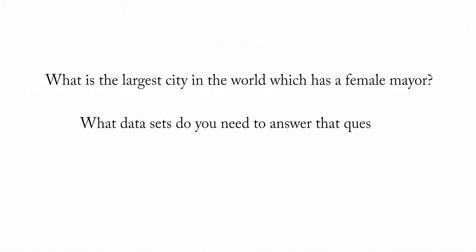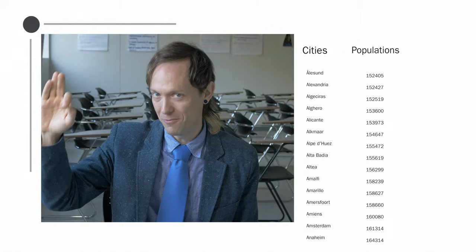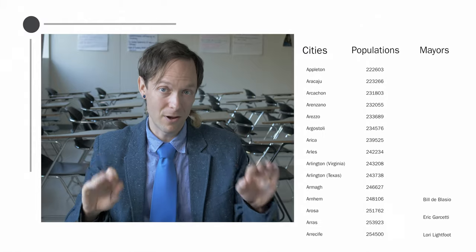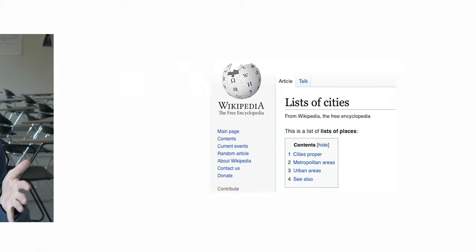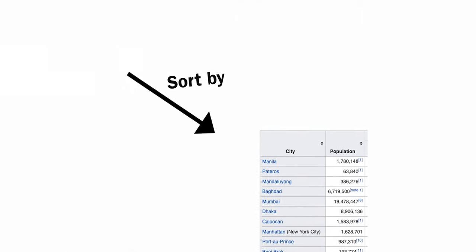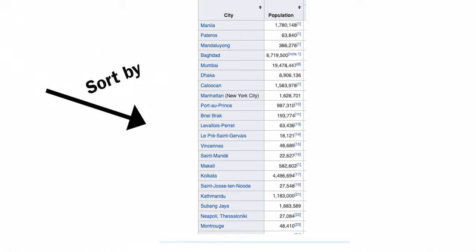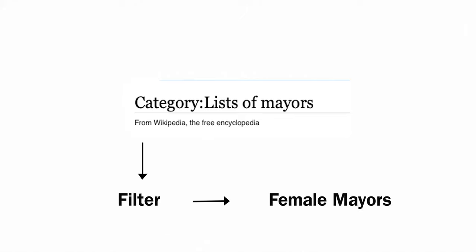What data sets do you need to answer that question? The answer is that you need a list of every city in the world, you need the populations of every city, you need a list of every current mayor for all the cities, and you need to know the genders of every mayor. So first you list every city in the world — Wikidata has this, Wikipedia also has this information and it translates very easily into Wikidata. You sort the list in order of population, then identify the mayor associated with each city, then filter the list to only show female mayors, and then you get your answer.